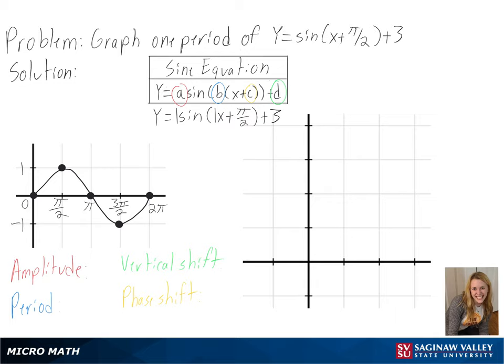We can see that our phase shift is a negative pi over 2, so we will move our y-axis pi over 2 units to the left. We also have a vertical shift of 3, which will make our graph go up 3 units, so our center will be at 3.